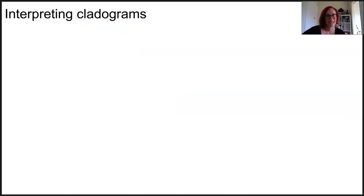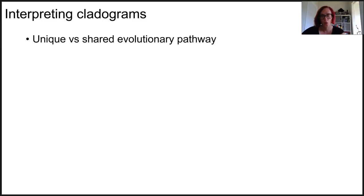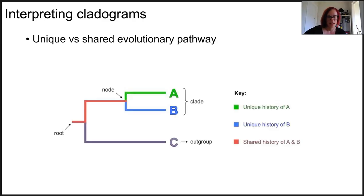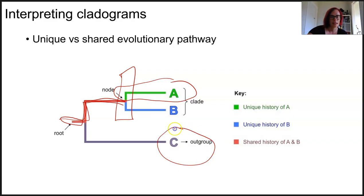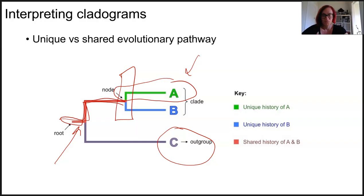Depending on where an organism appears in the tree, it will have a unique or shared evolutionary pathway. For example, A and B both travel through a shared pathway before diverging into their unique histories. C is the outgroup because while the common ancestor is further back, it shares no other common features with species A and B. So when asking whether A is more closely related to B or C, we can see that A and B have a more recent common ancestor, making them more closely related.